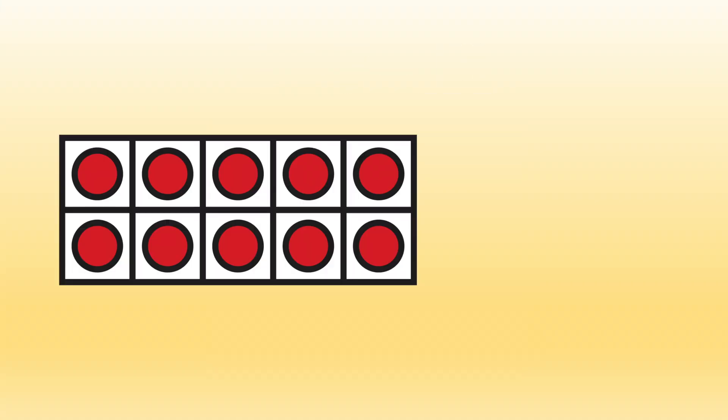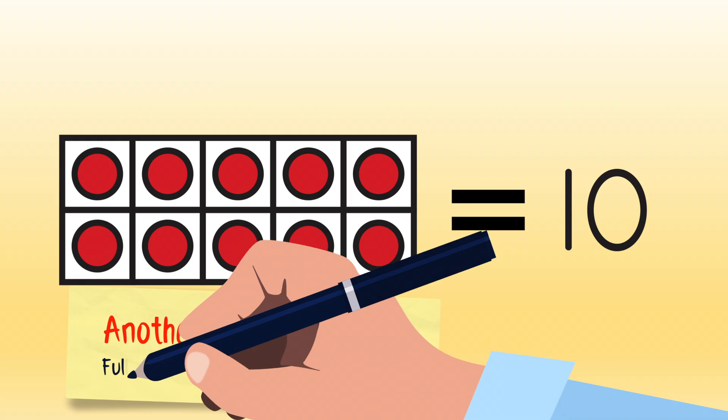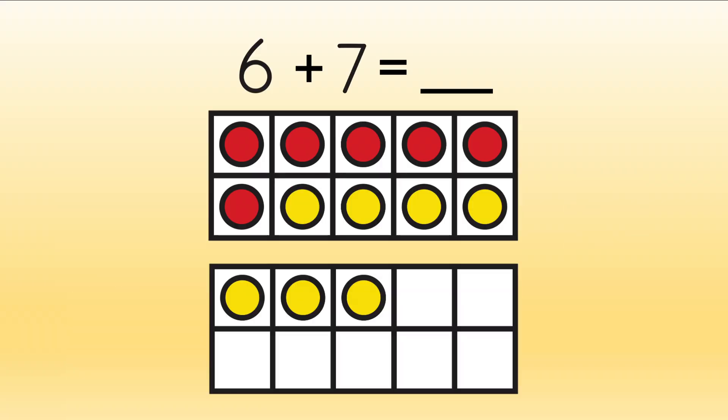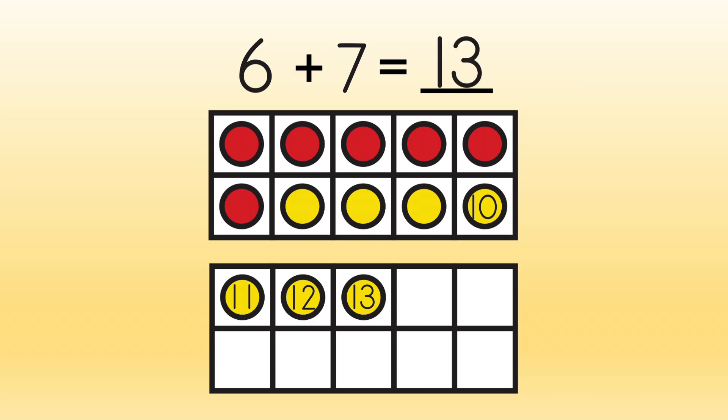But we know a full frame is the same as ten, right? So let's try another shortcut. Since we have ten, we'll count up the rest of the markers. Here's our ten. Eleven, twelve, thirteen. So our answer using shortcuts is that six plus seven equals thirteen.